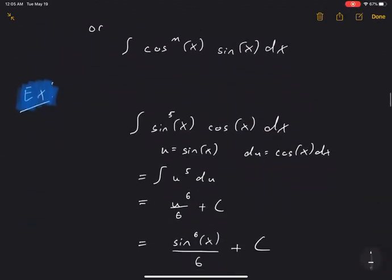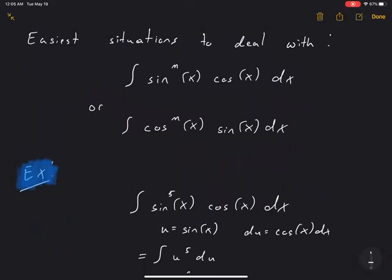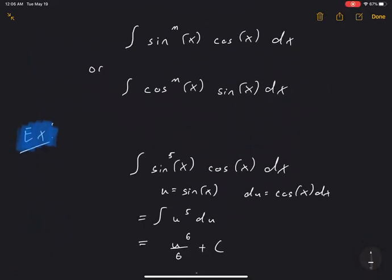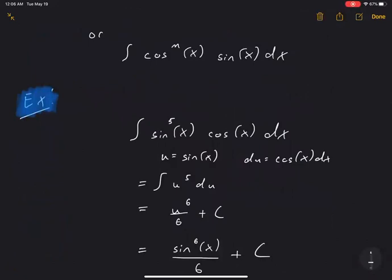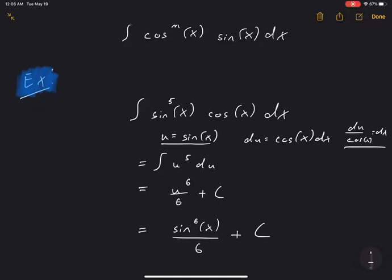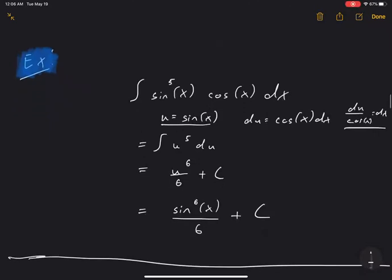Let's see an example. Let's say we had the integral of sine to the power of five times cosine of x. I just have a single power of cosine, so I do a u-substitution U equals sine. Then DU equals cosine dx, so DU over cosine x equals dx. I sub this in for sine of x and this in for dx. My integral just becomes U to the fifth DU. That's a really easy integral — it's U to the sixth over six plus C. Then I undo my substitution to get sine of x to the power six over six plus C.